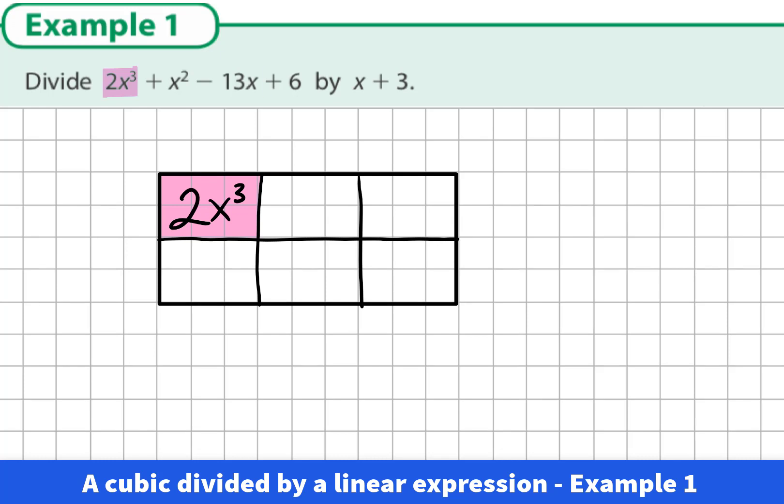We also know that the constant term, the plus 6, goes in the opposite corner. Our linear expression is one of the factors of the cubic and that goes on the left-hand side, x plus 3.